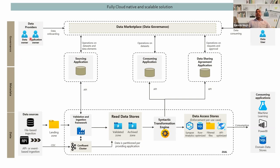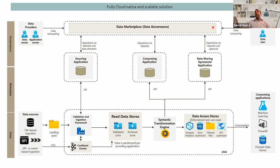The governance layer is where data providers and data owners make a request to onboard their data. We have something called sourcing applications where we register the datasets and all metadata related to the data. Once governance is defined and metadata is registered, data sources can send their data in different mechanisms — whether file system, API, or streaming to our data store. We also do some validation to ensure what was committed from a data owner perspective is in line with expectations.